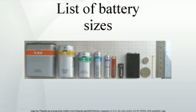Standardization. The current IEC standards for portable primary batteries bear the 60086 number. The relevant U.S. standards are the ANSI C18 series, which are developed by a committee of the U.S. National Electrical Manufacturers Association. Both standards have several parts covering general principles, physical specifications and safety.